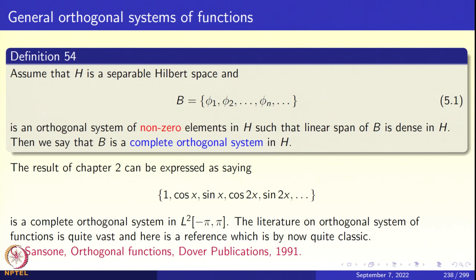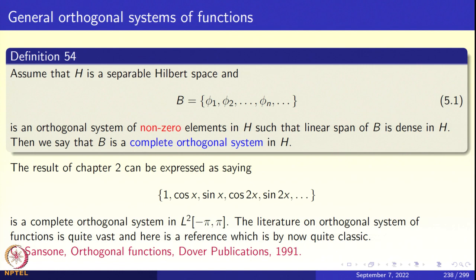We say that B is a complete orthogonal system. Completeness refers to the fact that the linear span of B is dense. This definition has two components: the orthogonality component and the closure of the linear span in H, which refers to completeness. The results of Chapter 2 say that {1, cos x, sin x, cos 2x, sin 2x, ...} is a complete orthogonal system in L2 of (−π, π).